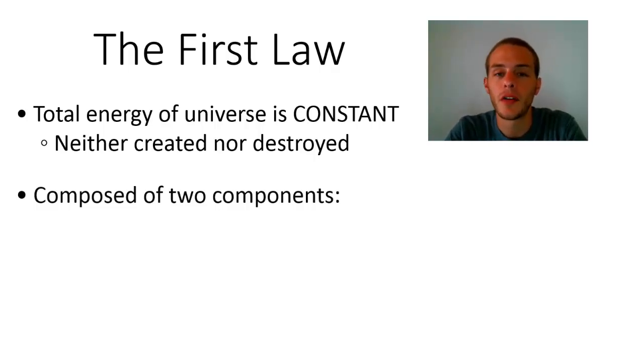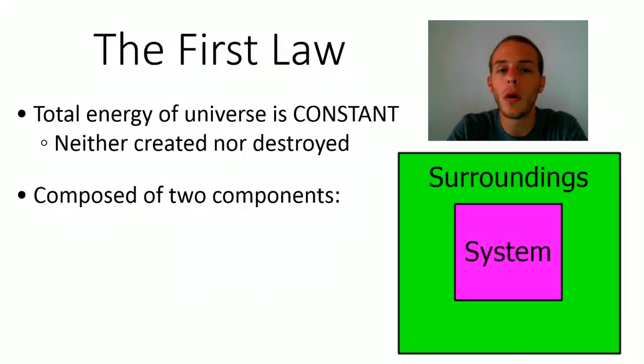And to simplify our discussion on the universe, it's very useful to think of the universe as consisting of only two components that we call the system and the surroundings. So imagine this big green square, green and purple square, is the universe and then there's two components. The outer square is the surroundings and the inner square is the system.